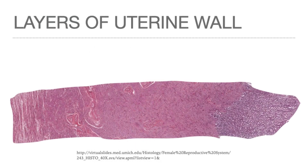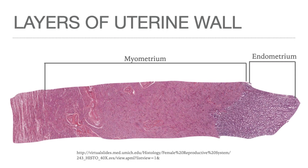The endometrium is lined with simple columnar epithelium. The muscle layer of the uterus is called the myometrium, composed of interlacing bundles of smooth muscles separated by connective tissue. The outermost layer is the perimetrium, composed of connective tissue. Smooth muscles decrease and connective tissue increases from the isthmus toward the cervix, which consists primarily of dense connective tissue containing elastic fibers.